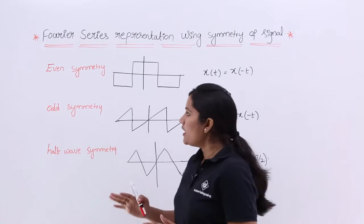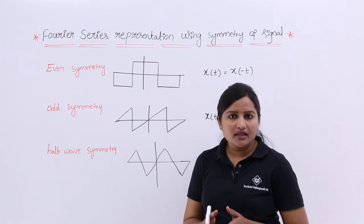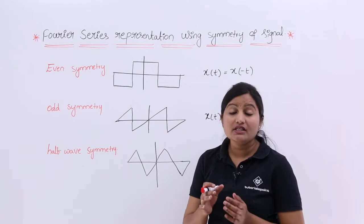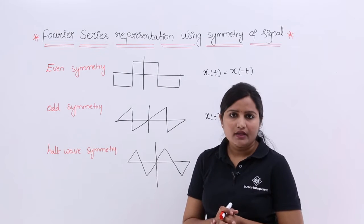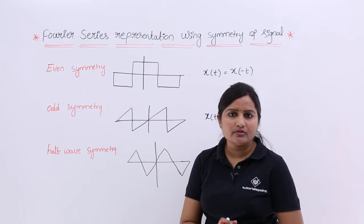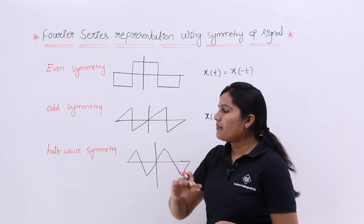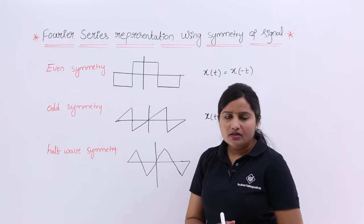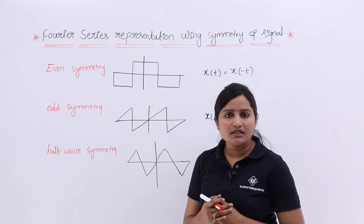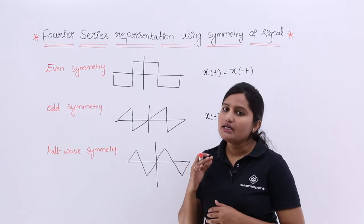If a signal is satisfying even symmetry, then we are having only even components — that means all cosine terms will be there. In our trigonometric Fourier series representation, the even symmetric terms are cosine terms, so we are having only cosine terms. Coming to odd symmetry, here we are having only sine terms. If the signal is satisfying odd symmetry, the Fourier series representation also has only sine terms.